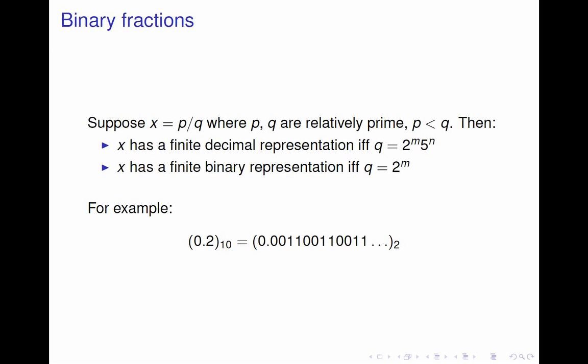For example, 0.2 in decimal is 0.00110011 repeating in binary. What that means is that things that you write down in decimal exactly cannot necessarily be written down exactly as binary fractions. If you write down 0.2 in MATLAB or in another computer program that's using binary floating point behind the scenes, the representation that the computer stores is not exactly 0.2. It's rounded by a little bit to fit into a finite number of binary digits.